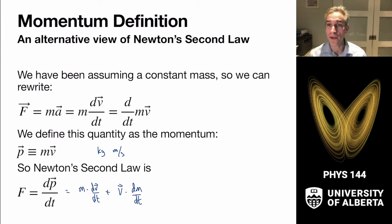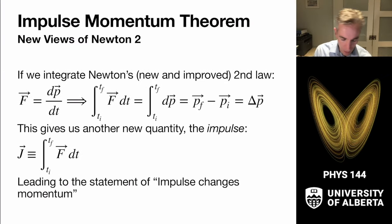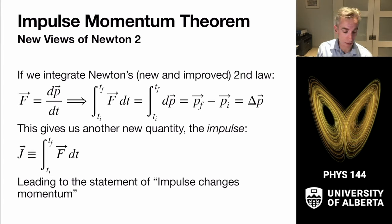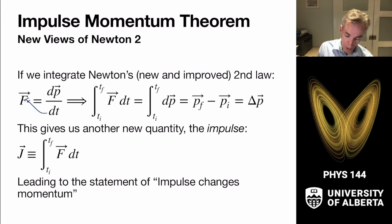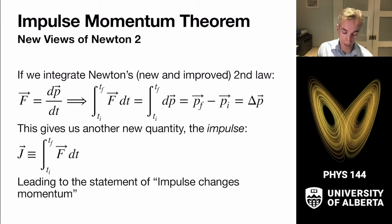This allows us to solve variable mass problems — what happens when the mass in our system is changing. We'll get to that next week with rockets. But for now, let's consider the impulse-momentum theorem, which arises from F = dp/dt. We take that time derivative and integrate it, integrating both sides from time initial to time final. The integral of dp is just the difference: p final minus p initial, the change in momentum.